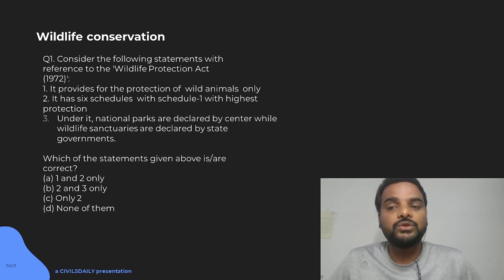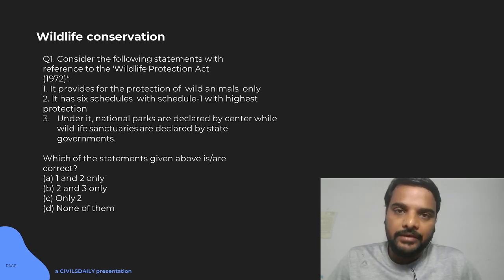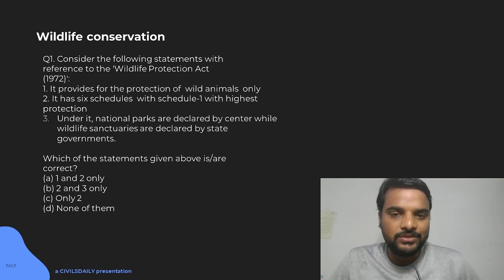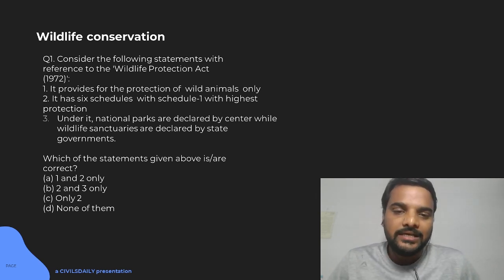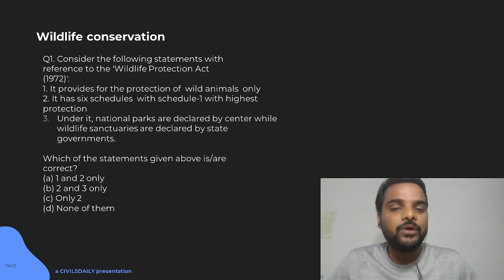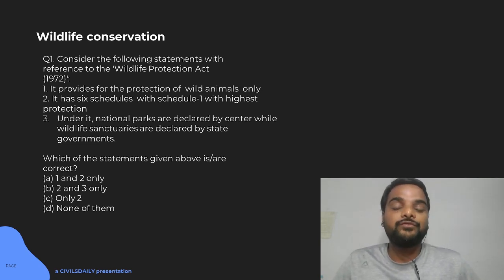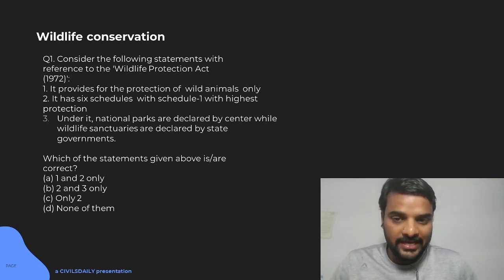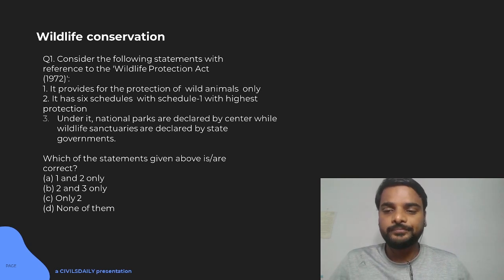The Act has 6 schedules, with Schedule 1 providing the highest protection — that looks logically true, so we consider statement 2 true. Regarding statement 3: National Parks are declared by the Centre and Wildlife Sanctuaries by State Government — this is not true. While forests and wildlife are on the concurrent list, all forests and wildlife areas are under the administrative control of the State Government. Both National Parks and Wildlife Sanctuaries are declared by the State Government. Only their boundaries cannot be changed without permission from the National Board of Wildlife, headed by the Prime Minister. So only statement 2 is true here.